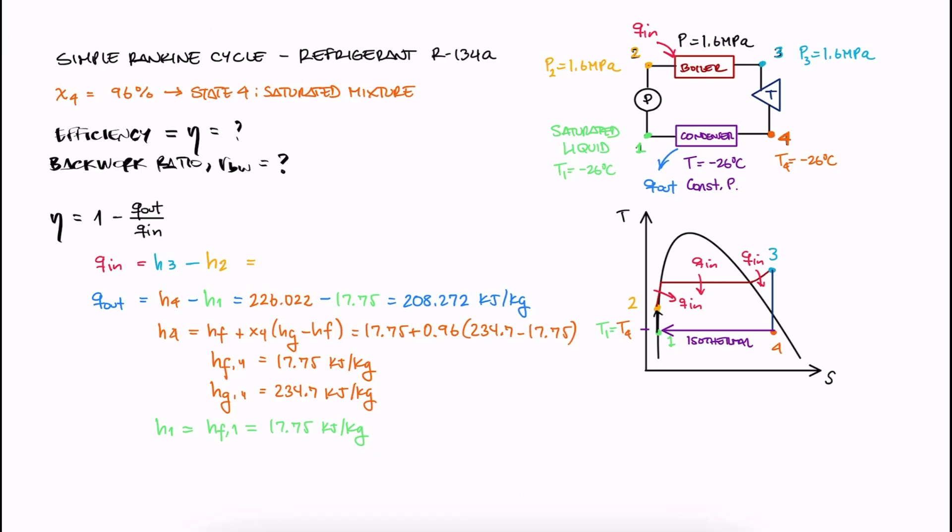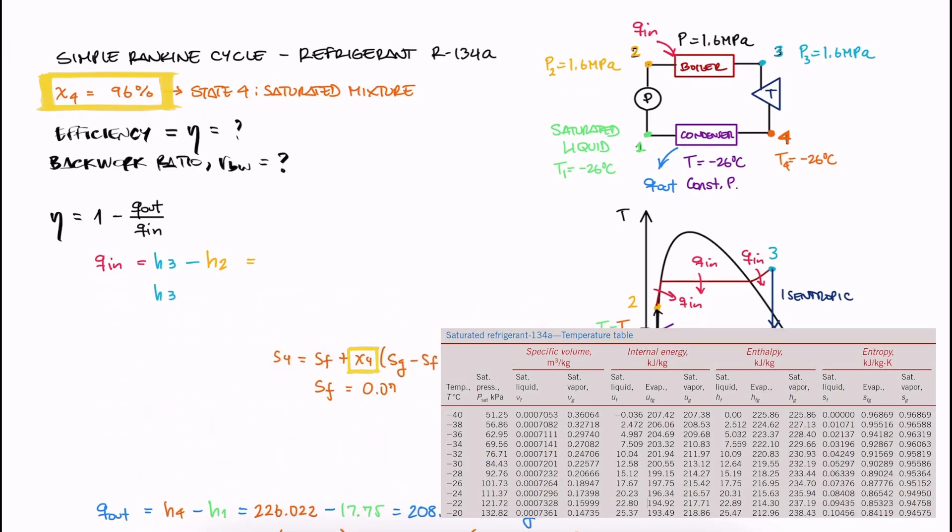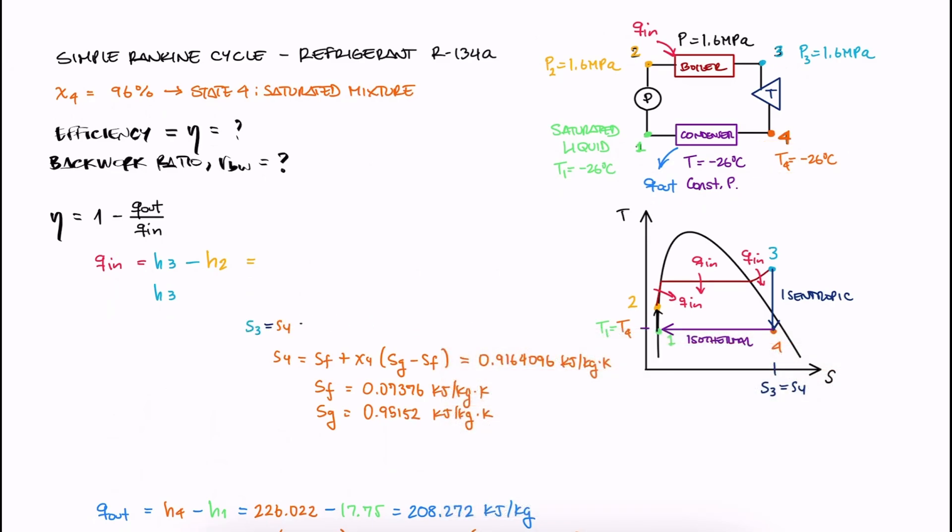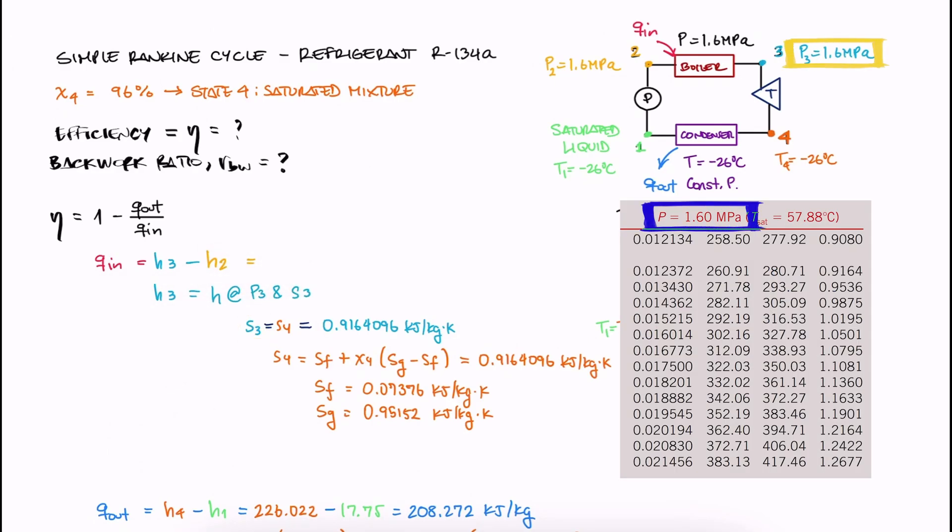What we know about 3 is that it undergoes an isentropic process to get to 4. And since S4 can be calculated with the quality and the SF and SG values for T4, we do know the value for S3. With that second independent property, we now look up the subtable for the given pressure and look for the S3 value.